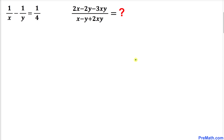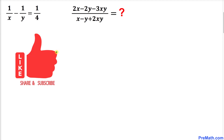Welcome to pre-math. In this video lesson we have been given this rational problem: 1 over x minus 1 over y equals 1 over 4. Now we are going to find the value of this rational expression: 2x minus 2y minus 3xy divided by x minus y plus 2xy.